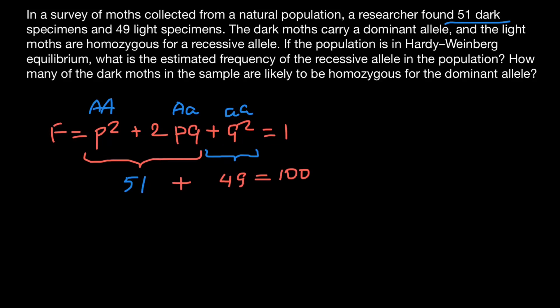The next step is to find the frequency of the dominant and recessive allele. We have alleles p and q, where p stands for the dominant allele A, and q stands for the recessive allele a. If we add these two allele frequencies, we get 1 or 100%. If we need to do calculations on the percentage scale, we multiply by 100. Conversely, if given numbers in percentage form and we need the scale between zero and one, we divide by 100.